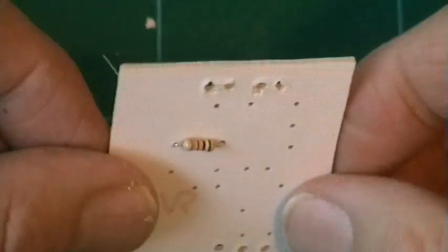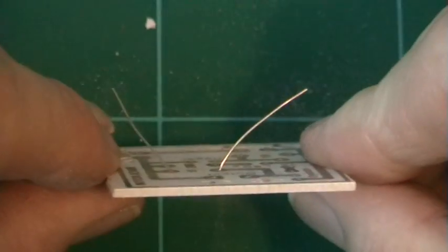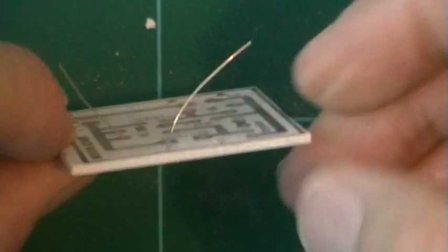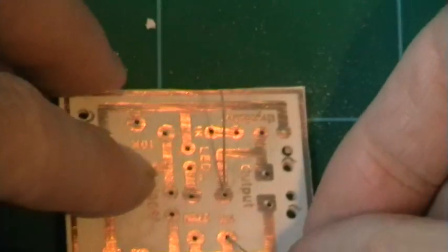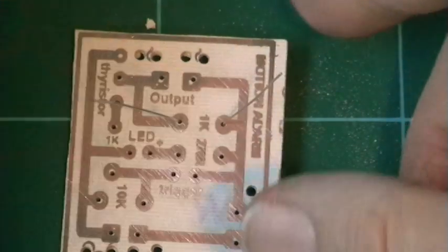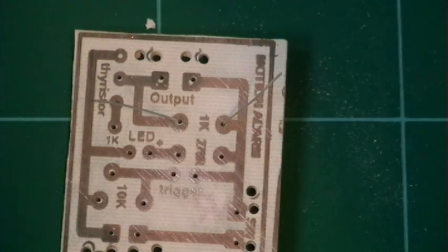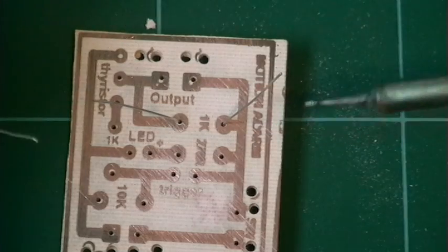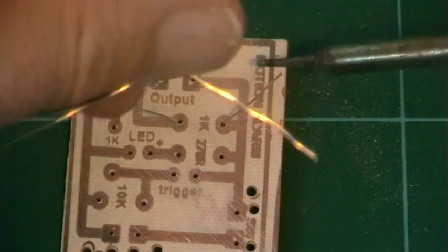So we've got the resistor up against the circuit board and the legs out at 30 degrees. Now we're ready to solder it. So we've placed the board down on the table, take our soldering iron and we've got our solder.